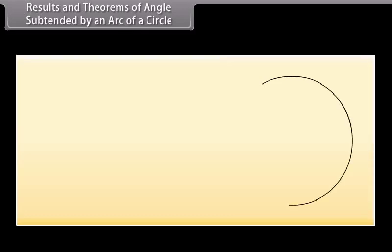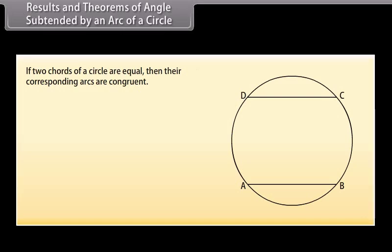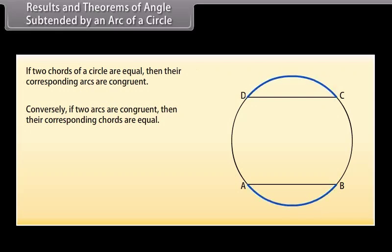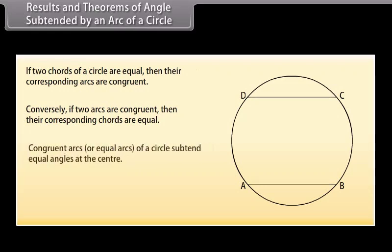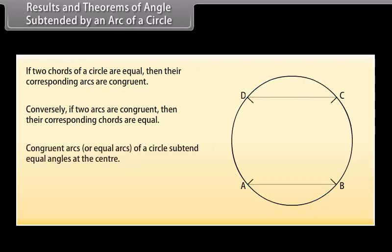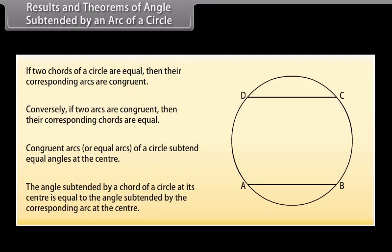Results and theorems of angles subtended by an arc of a circle. If two chords of a circle are equal, then their corresponding arcs are congruent. Conversely, if two arcs are congruent, then their corresponding chords are equal. The second result says that congruent arcs or equal arcs of a circle subtend equal angles at the center. That means the angle subtended by a chord of a circle at its center is equal to the angle subtended by the corresponding arc at the center.